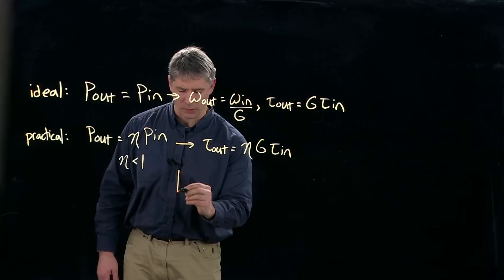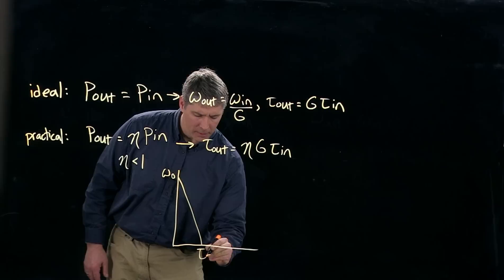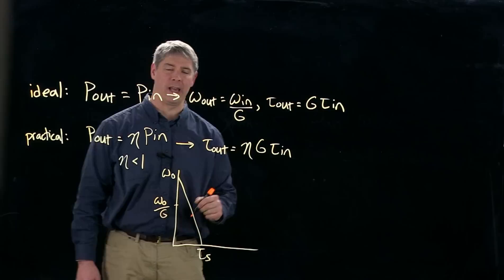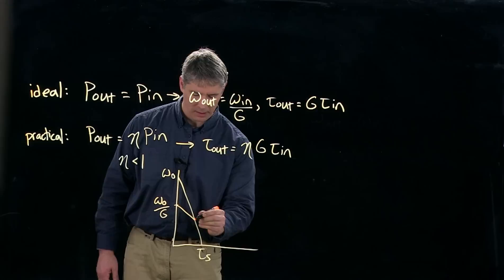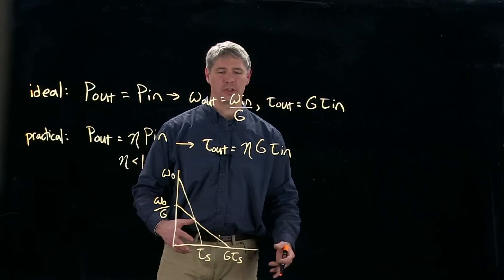So if we took our original speed-torque curve of the motor, here's the no load speed and the stall torque. With an ideal gear head, we would get a speed-torque curve at the output that looks like this. We've reduced the maximum speed by a factor of g, and we've increased the maximum torque by a factor of g.